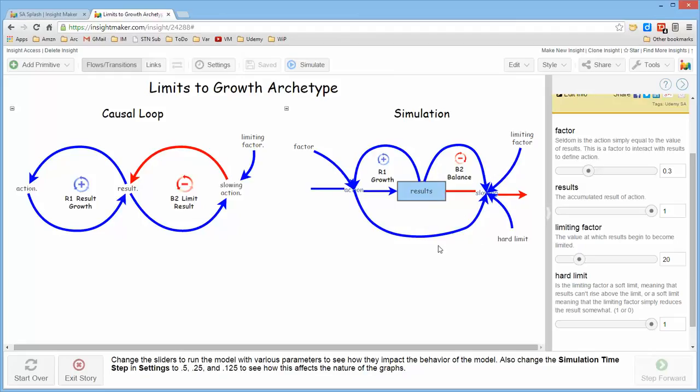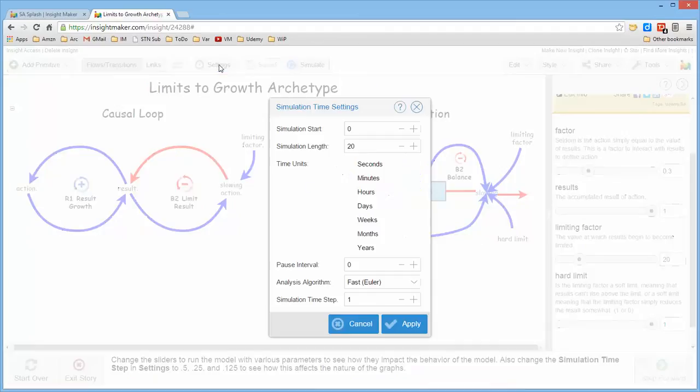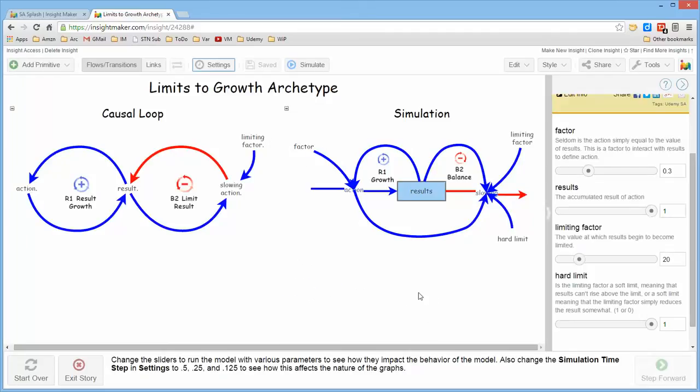For the simulation model, you can then go ahead and simulate it and you can also change the time settings. And I said that it would be good if you change this time step to 0.5, 0.25, or 0.125 and see what kind of impact that has on the behavior of this structure.